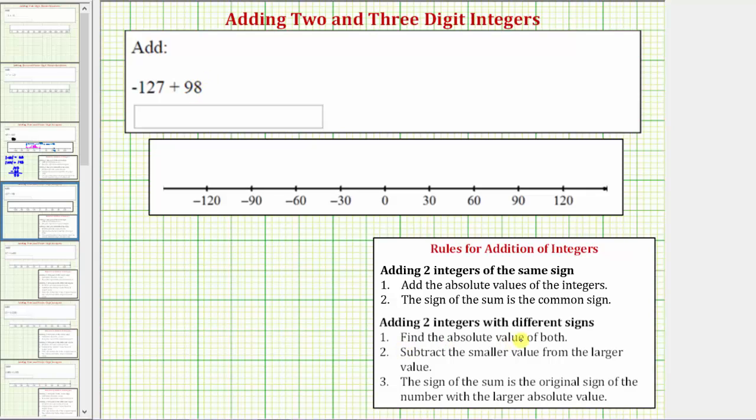Step one, we find the absolute value of both integers, so we need to determine the absolute value of negative 127 and the absolute value of positive 98. The absolute value of a number is a number's distance from zero, and distance is always positive, and therefore the absolute value of negative 127 is positive 127, and the absolute value of positive 98 is equal to positive 98.